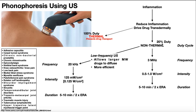Remember, that's a 20% duty cycle. A duty cycle has to do with what percentage of the time the machine is actually emitting ultrasound waves. If it's a 100% duty cycle, it's emitting those ultrasound waves 100% of the time, causing vibrations in the tissues — enough vibrations to produce heat, which is why we have thermal effects. With a 20% duty cycle, the machine is only emitting ultrasound waves 20% of the time, which is not enough to significantly heat up the tissues. So it's non-thermal.